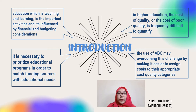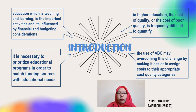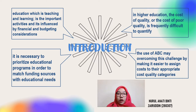Therefore, it is critical to find additional income to maintain these plans or to find ways to reduce costs. In higher education, the cost of quality or the cost of poor quality is often difficult to quantify. The use of activity-based costing can help overcome this challenge by facilitating the allocation of costs to appropriate cost quality categories, thereby facilitating continuous improvement activities in higher education institutions.